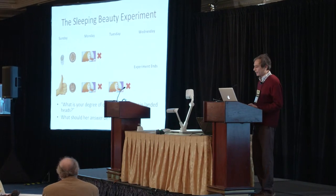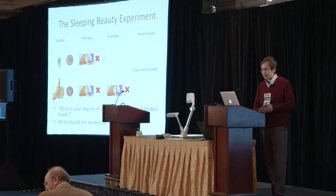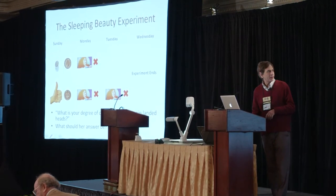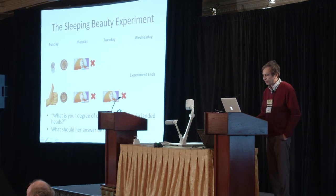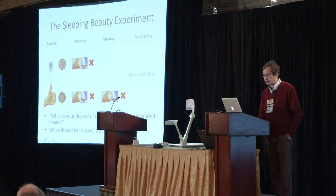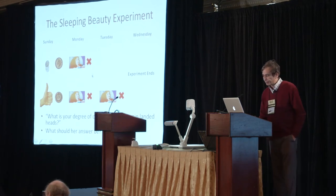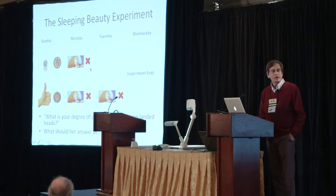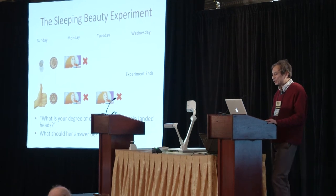So what is the Sleeping Beauty experiment? It's basically an experiment that Sleeping Beauty subjects herself to. On Sunday, she is put to sleep, but before she goes to sleep, she's told what's going to happen. A coin is going to be tossed, and depending on whether it comes up heads or tails, different things happen. If it's heads, she's woken up on Monday. If it's tails, she's woken up on Monday and Tuesday and interviewed each time, and then the experiment ends on Wednesday. After she's woken up and interviewed, she's given a drug that makes her forget that she ever awoke, although she remembers all the details of the experiment. And every time she's woken up, she's asked: what is your degree of certainty that the coin landed heads? And what should her answer be? That's the question.